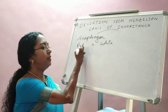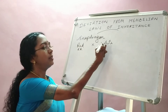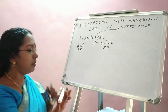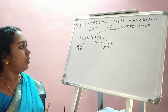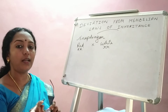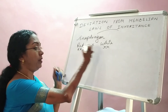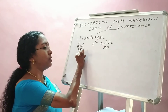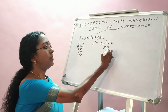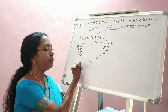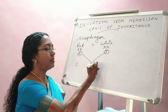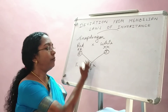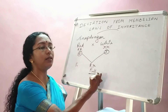The parents will be a true breeding red flower colored plant (RR) and a white flower colored plant (rr). You would think that capital R for red means red will be dominant and white will be recessive. But when these were crossed and alleles separated, in the F1 progeny the plants were neither red nor white — they were all pink in color.